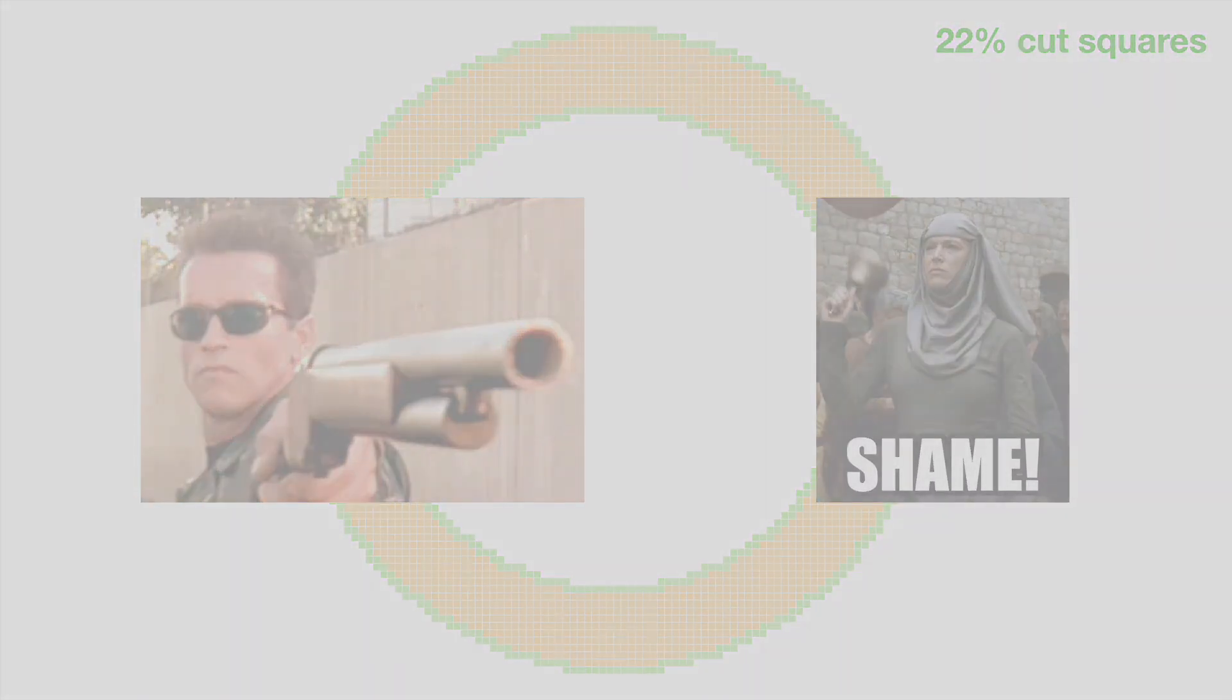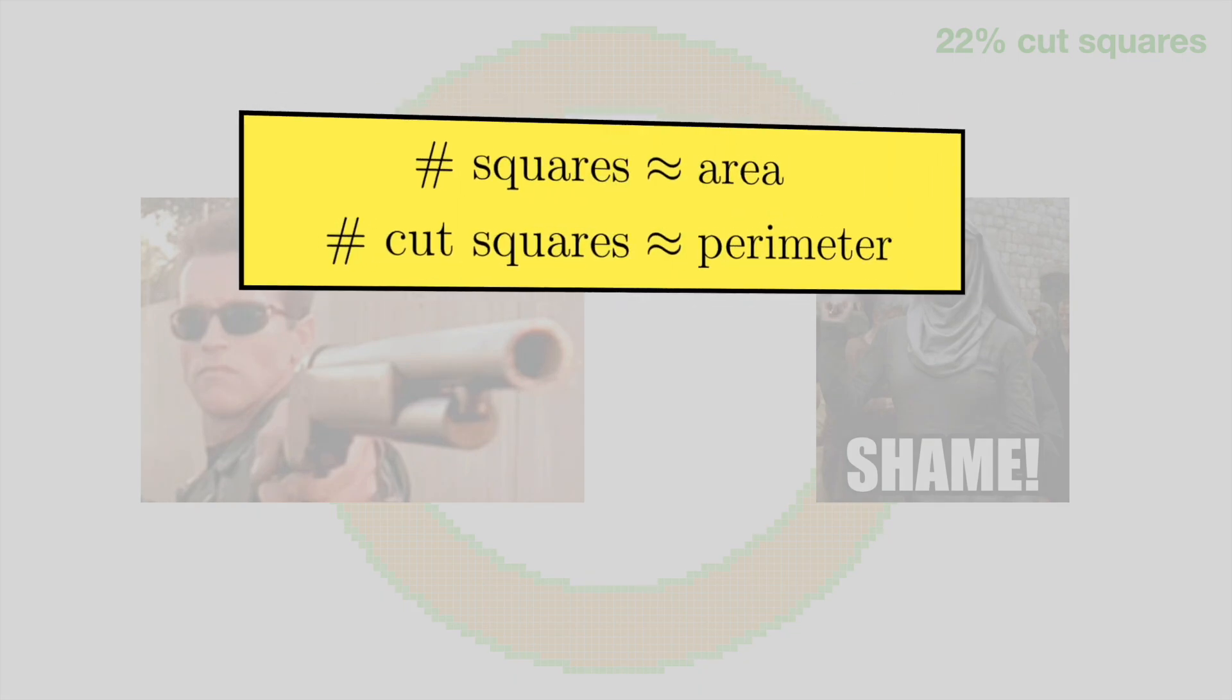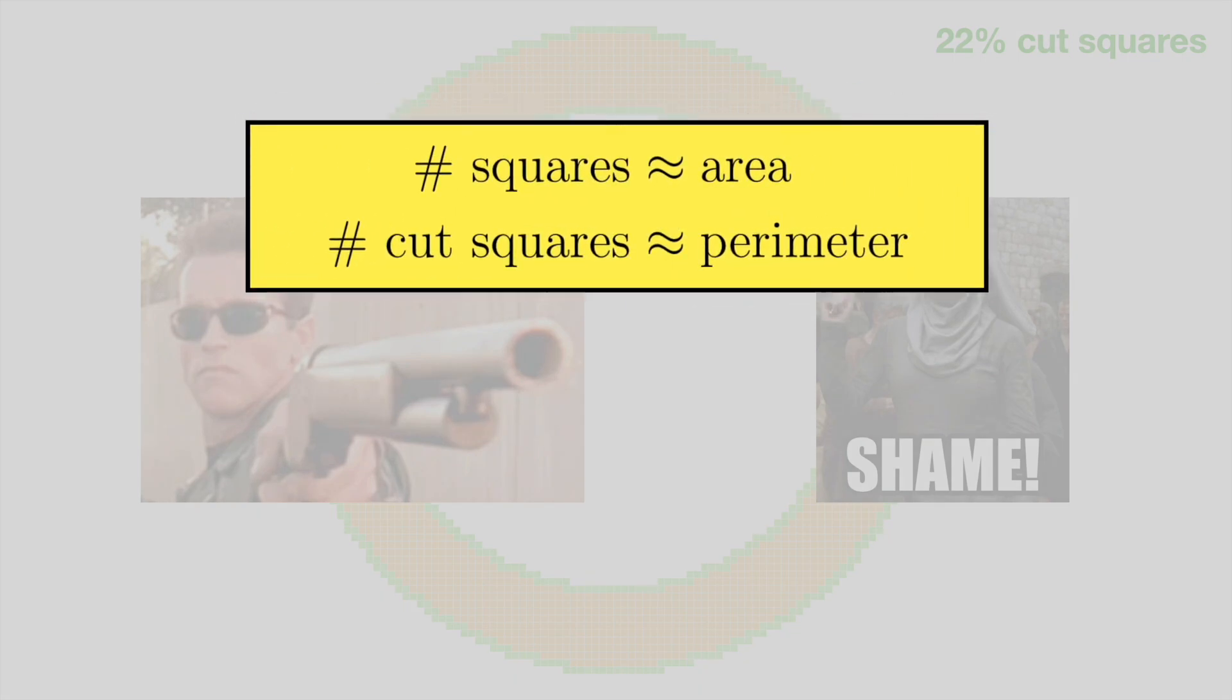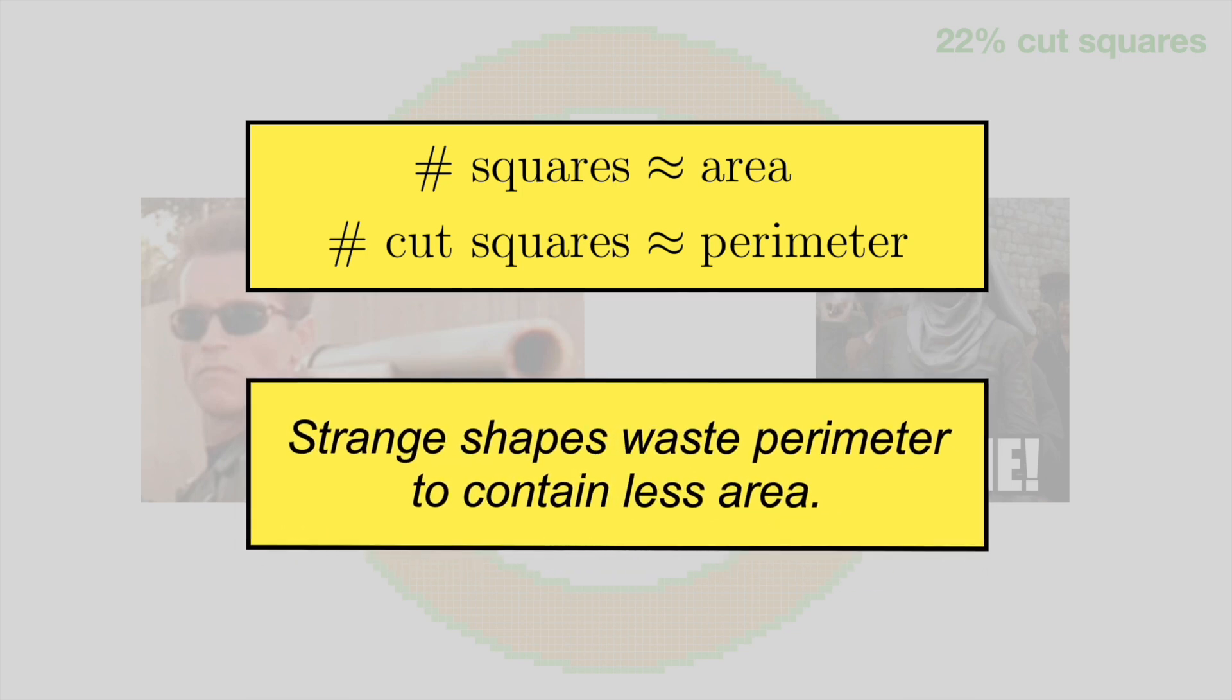At this point, you may have noticed that the number of squares roughly corresponds to the area of the district, while the number of cut squares corresponds to its perimeter. Also, the examples we've seen illustrate a key concept, namely that strange shapes waste perimeter to contain less area. This idea has a long history.